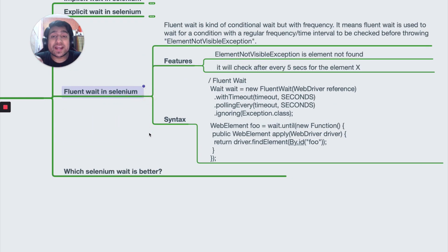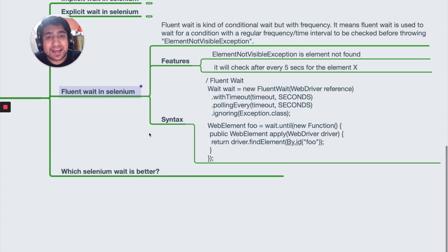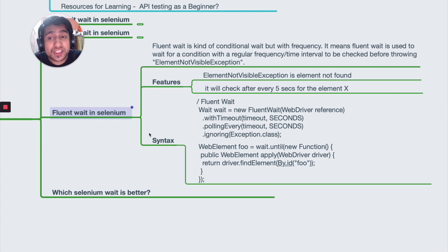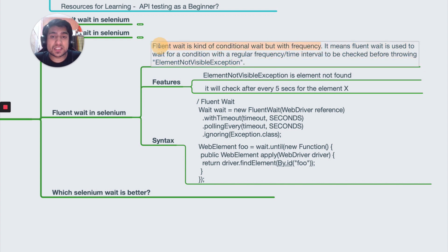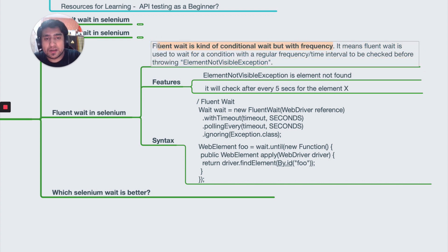There is also a third wait called fluent wait, and trust me it's one of the best ways to handle waits. We've been using it and it works very well. It's a kind of mixture of both implicit and explicit wait — it will wait for a condition but with a polling frequency.